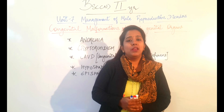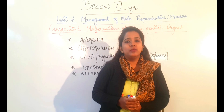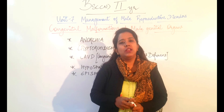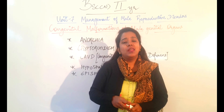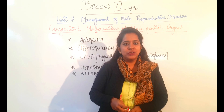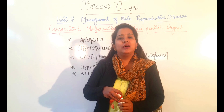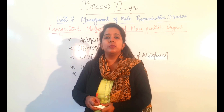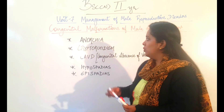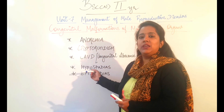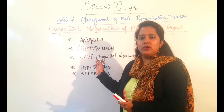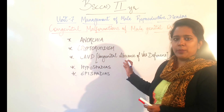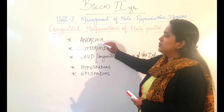Today we are starting with the Male Reproductive System Disorders unit and the first topic we are dealing with is congenital malformations or congenital defects that occur in the male genital organs or male reproductive organs. We are going to deal with some of the most commonly occurring congenital malformations in the male reproductive structures.